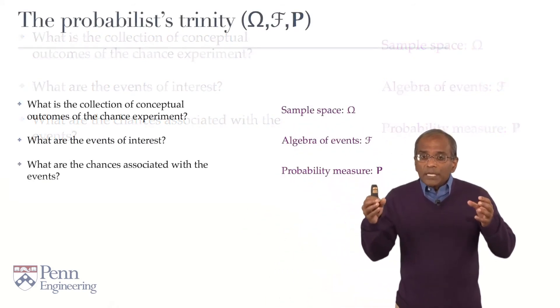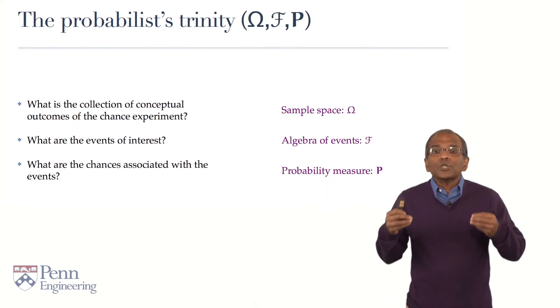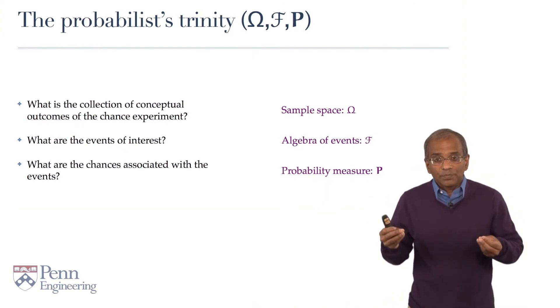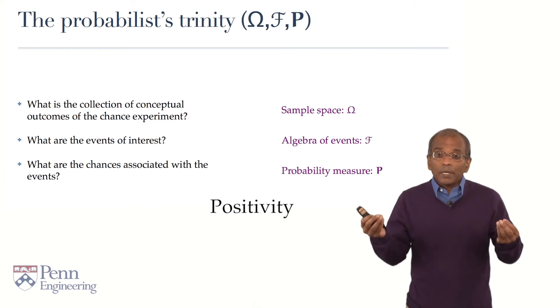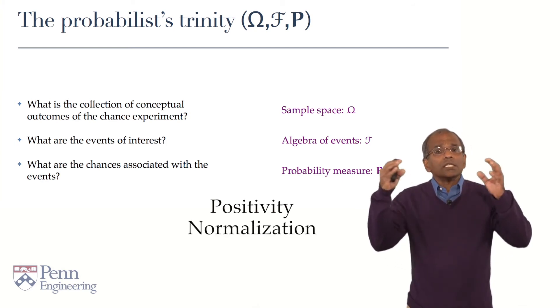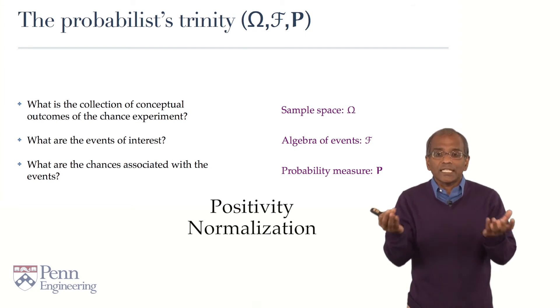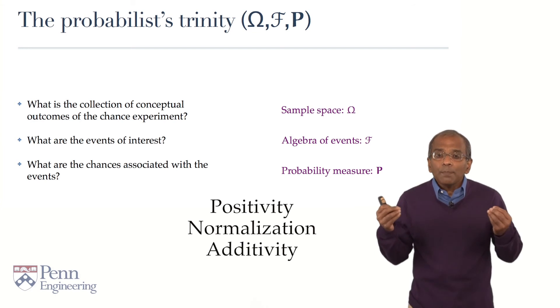Probability measure is subject to three fundamental axioms. The axiom of positivity: probability, mirroring chance, is always non-negative. The axiom of normalization: the entire sample space corresponding to the certain event has got probability 1. And finally, the important axiom of additivity.